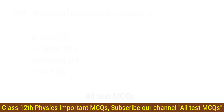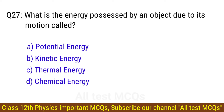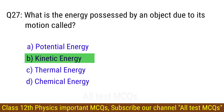Question number 27. What is the energy possessed by an object due to its motion called? The correct answer is option B: Kinetic energy.